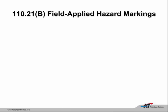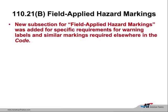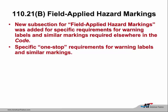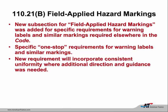In conjunction with 110.16, we saw 110.21B as a global change: field applied hazard markings. This is definitely going to coincide with the ANSI standard Z535 for labels. This now covers any label—not just arc flash hazards. It might be a voltage hazard or any hazard in your facility. One-stop shop is what they'd like to see for all warning labels: consistency in font size, colors, and wording, to bring uniformity to all the different labels we have out there.